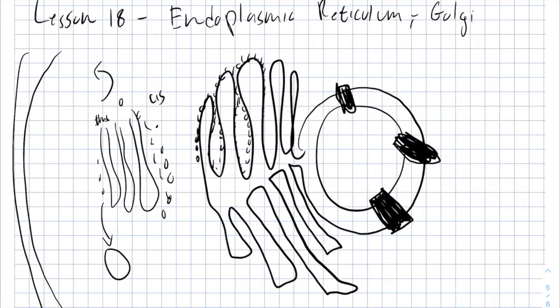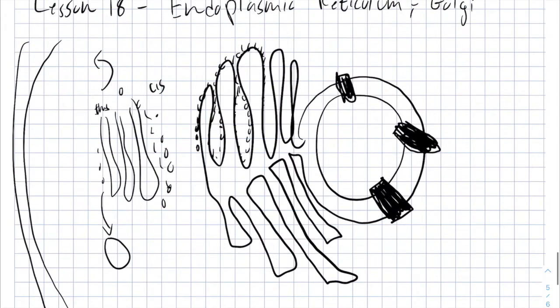Hey guys, welcome back. It's Ari from mentalmedsco.com. We are going to have our 18th lesson of biology in the IMAT course. Today we are going to talk about the endoplasmic reticulum and the Golgi apparatus.